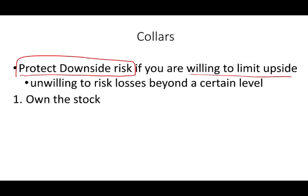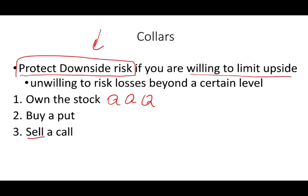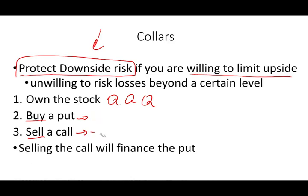Here's what you do: you own the stock or index — let's assume you own QQQ, the Nasdaq 100 ETF. You buy a put to protect your downside, so that if something happened you can still sell QQQ at a certain level. At the same time, you sell a call, meaning you're willing to surrender QQQ at a certain price. For simplicity, assume you buy the put for $1 and sell the call for $1, so the transaction finances itself — zero net cost — but you've limited your losses on the downside and your gain on the upside.